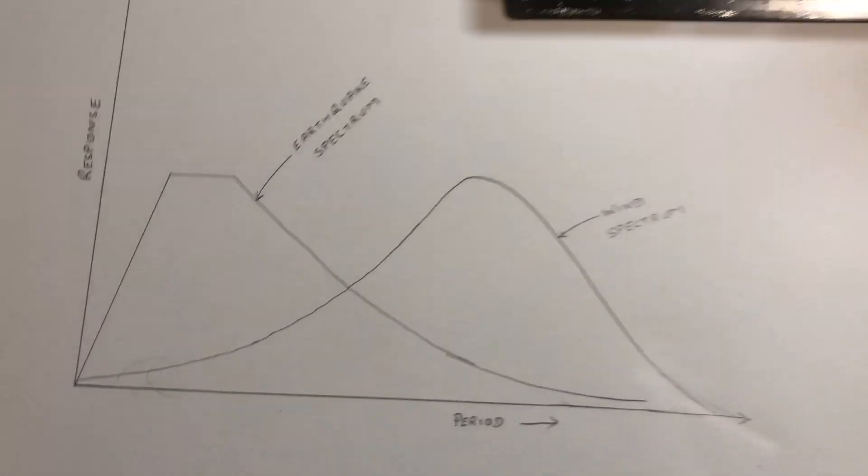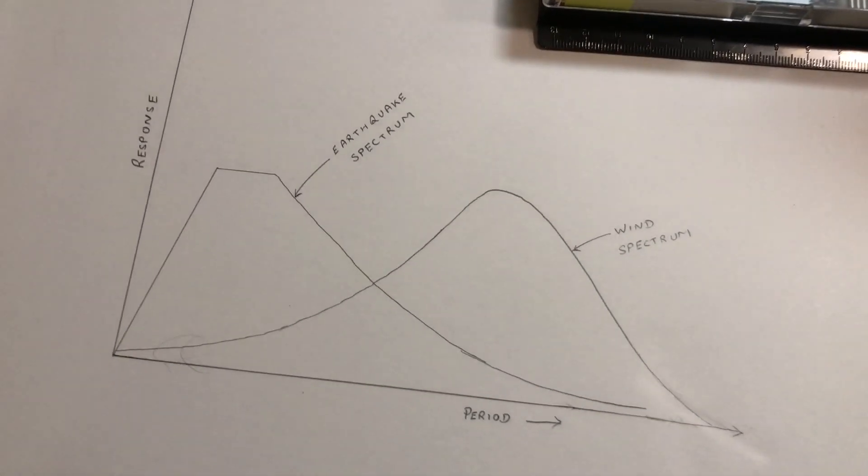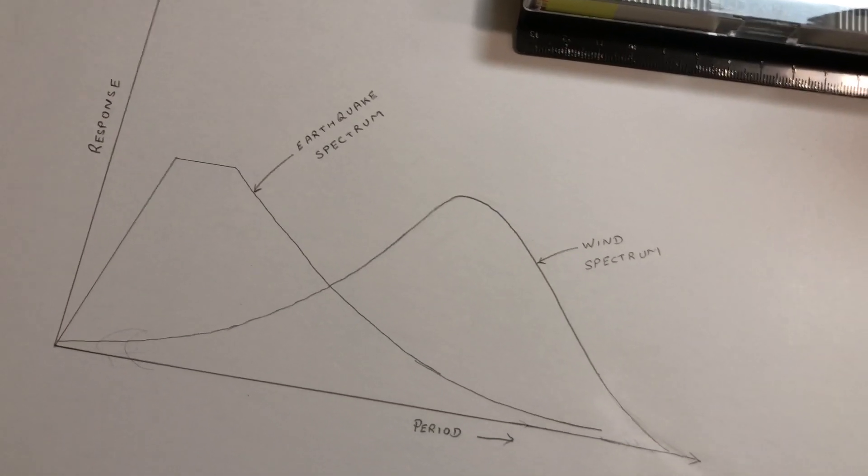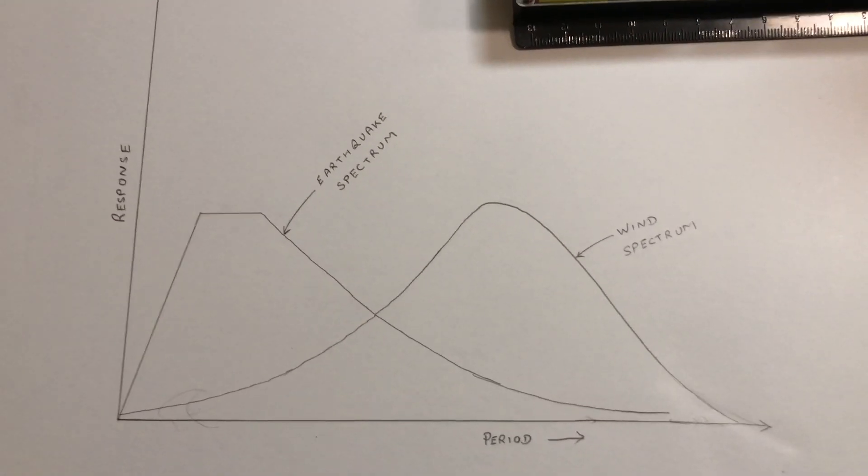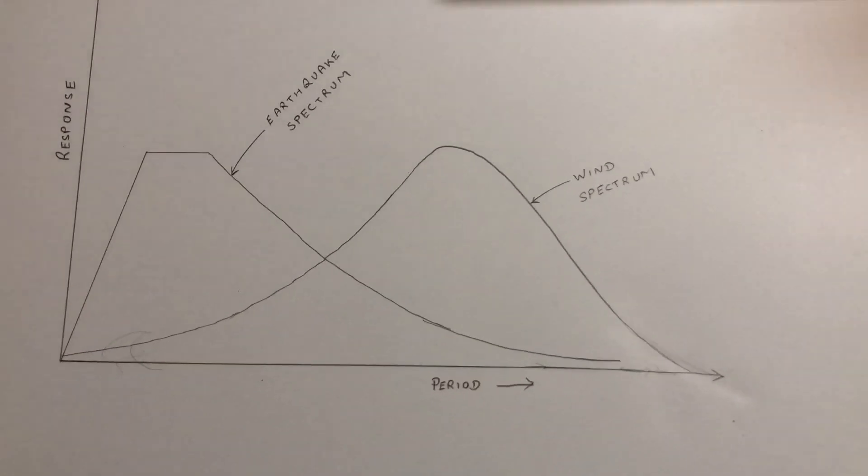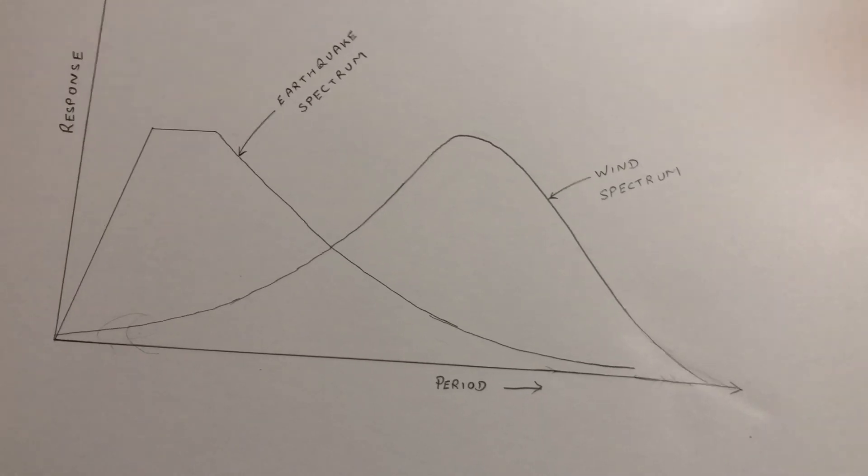They are also known as tuned mass dampers. Why tuned mass? Because the mass is selected in some proportion of the building weight itself, and the frequency of the damper is close to the primary period of the building.